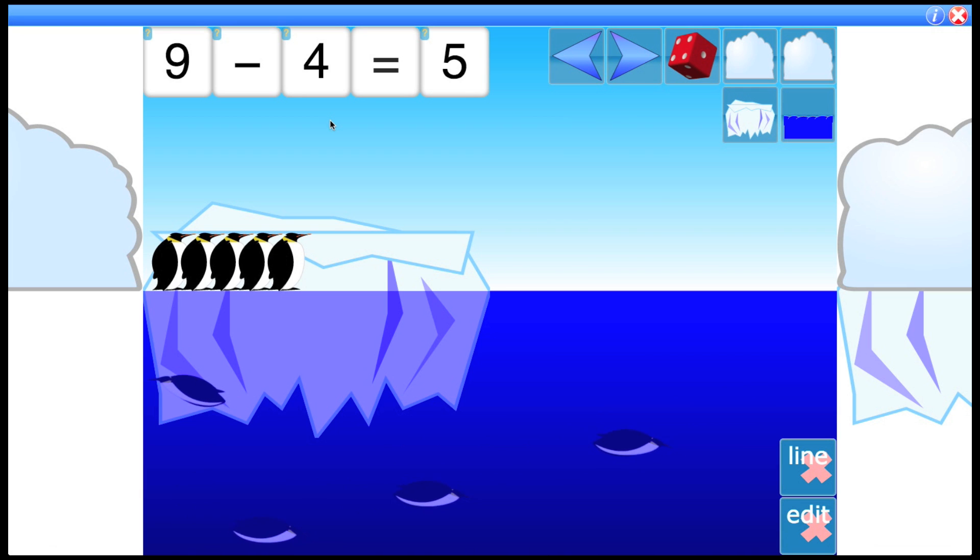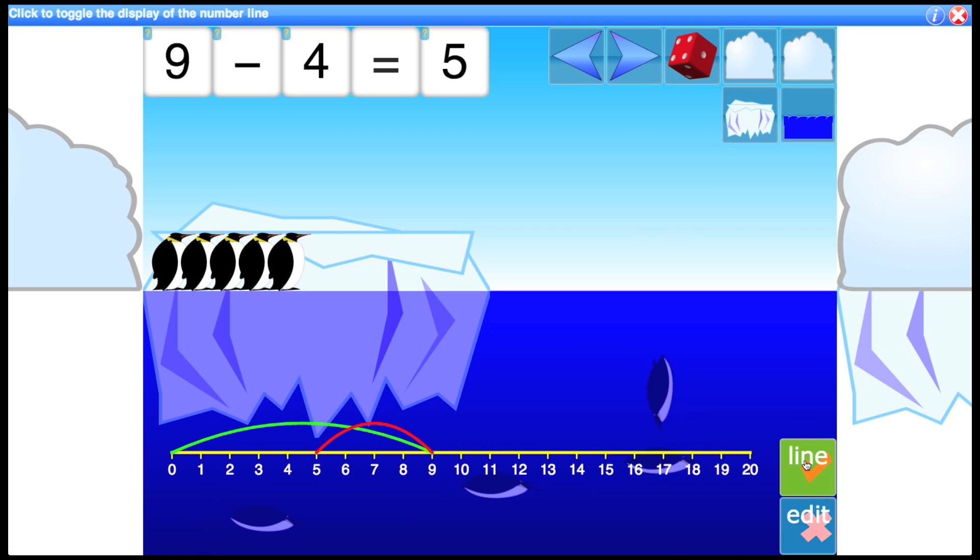Okay, the next thing we're going to look at is the number line. So I can click this control here and now we see a pictorial representation on the line of this particular number fact. So the green indicates there were 9 originally. The 4, 1, 2, 3, 4 have jumped in. So that moves backwards to give you 5. So this is a really good way to introduce number lines.